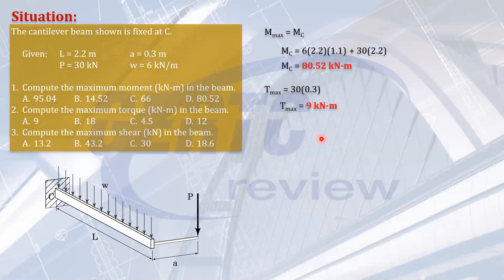And finally, the maximum shear in the beam. What is shear? Shear is the force parallel to the cross section of the beam, or the force perpendicular to the axis of the beam. The axis of the beam is this one, so the force perpendicular to that is vertical. Of course, the biggest shear will occur at the support, at the fixed end.